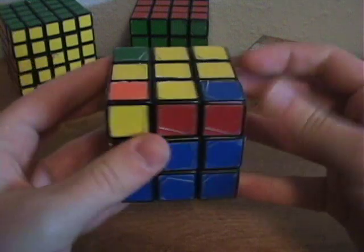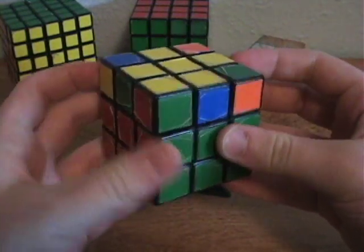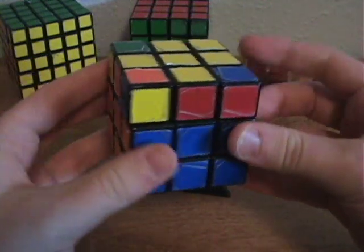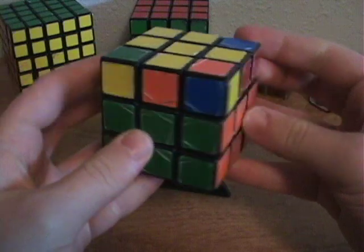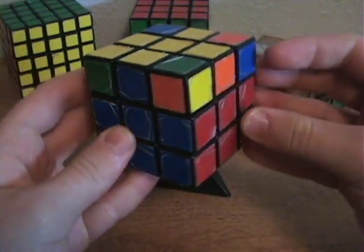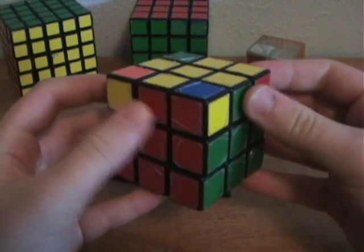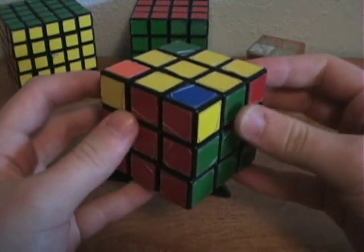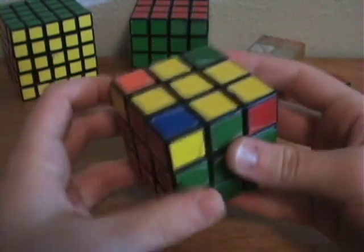Then just look around the cube again for any paired edges or centers and just rotate until you find them if you didn't. And here we go, red and green have paired centers. Now with the cube positioned just like this, do the algorithm again.